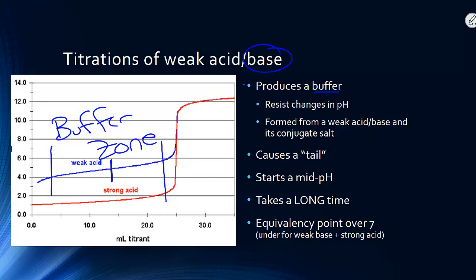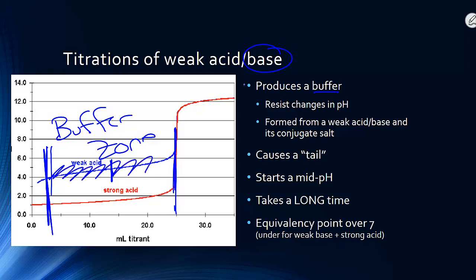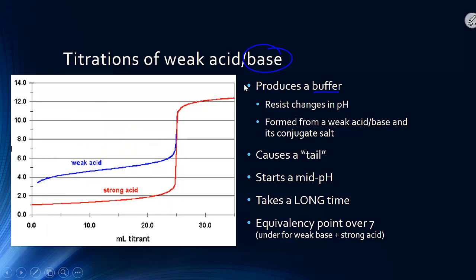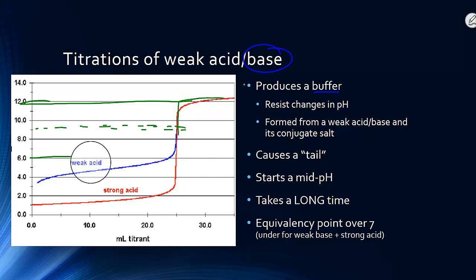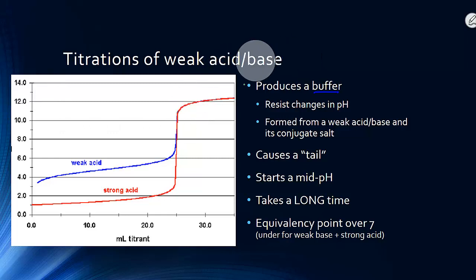The solution is most resistant to pH change at the geographic middle of the buffer zone — between the start of the tail and the equivalency point. The equivalency point is reached when the moles of acid equal the moles of base. On the graph, you can identify it as the geographic middle between where the curve starts rising steeply and where it flattens out again.